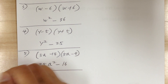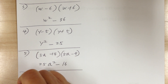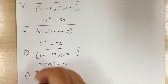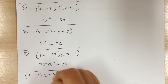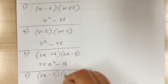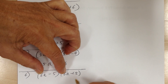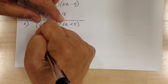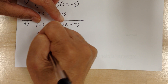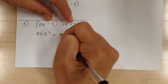You can use the conjugate shortcut — just multiply the corresponding parts. Number 6: you have 6a minus 5 times 6a plus 5. When you multiply, you're going to get 36a squared minus 25.